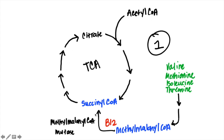Another entry point, relevant to B12, is through succinyl-CoA. Succinyl-CoA enters the citric acid cycle via methylmalonyl-CoA. Methylmalonyl-CoA is transformed into succinyl-CoA by an enzyme called methylmalonyl-CoA mutase, which can only work in the presence of B12 — B12 is its coenzyme. So if you're B12 deficient, methylmalonyl-CoA mutase cannot work, and you cannot convert methylmalonyl-CoA to succinyl-CoA.